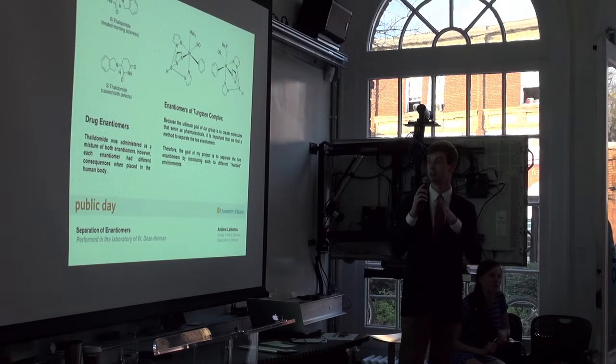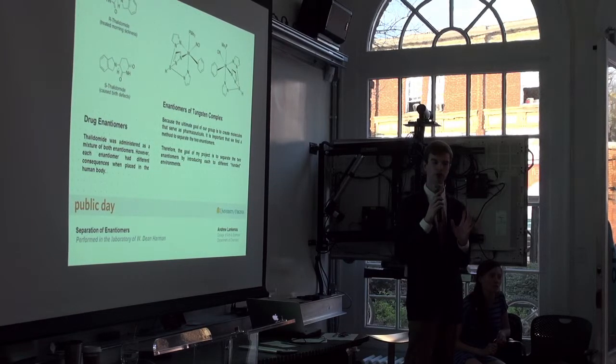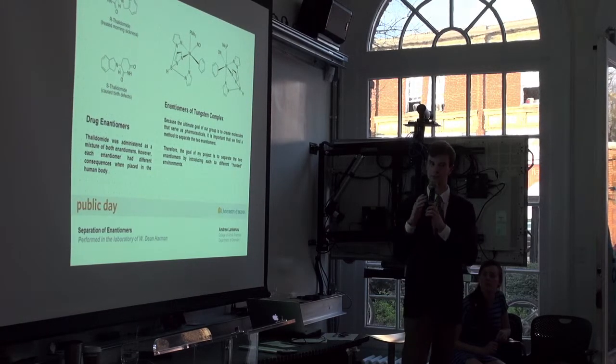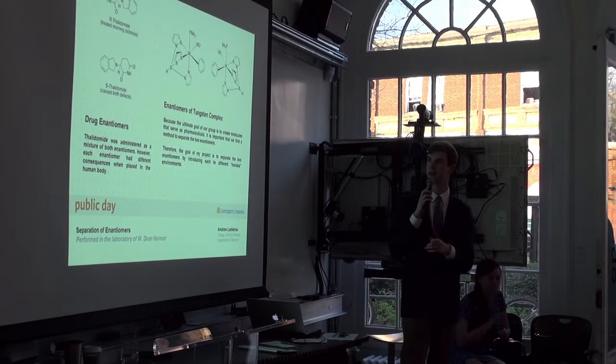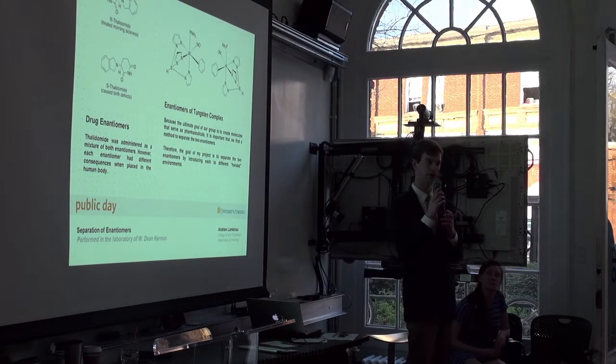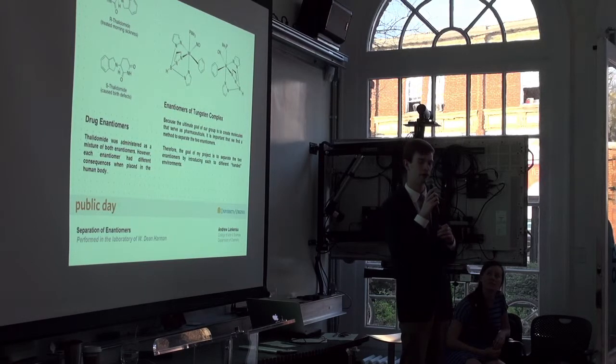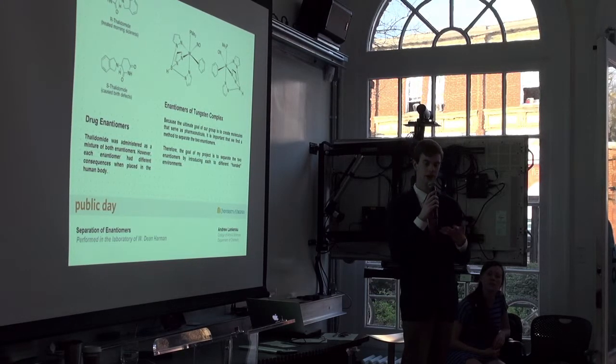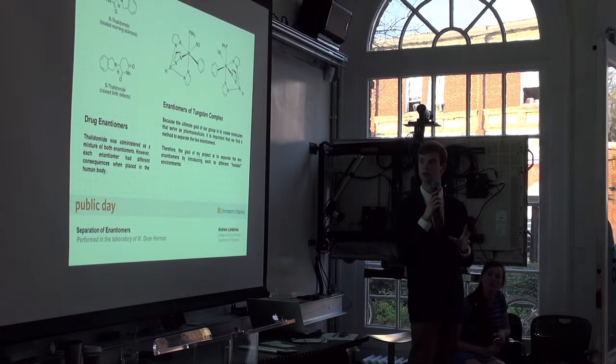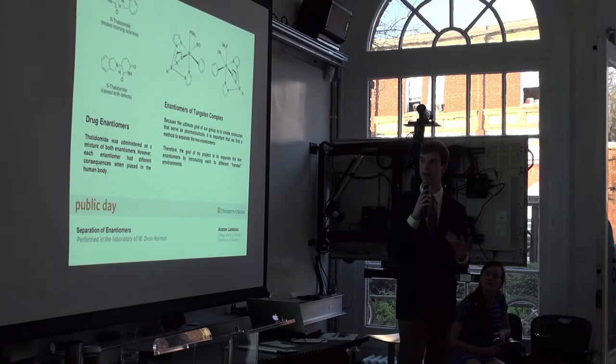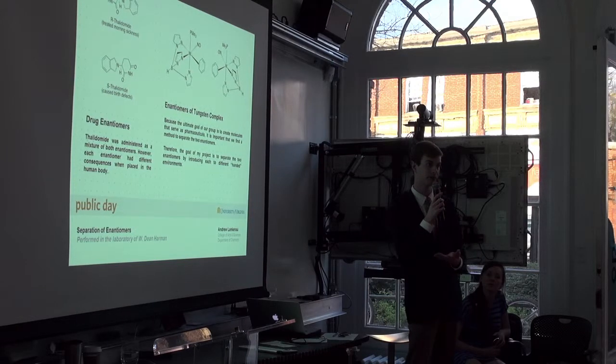The project that I'm working on is to separate these two mirror images, or these two enantiomers, of the metal that we use to facilitate these reactions. On the left there, I have shown the molecular structure of thalidomide, which was a drug used in the 1950s to treat morning sickness in pregnant women. One mirror image, one enantiomer of the drug, was successfully doing that, while the other one caused severe birth defects.